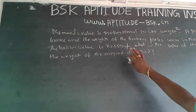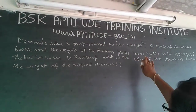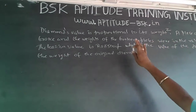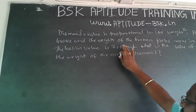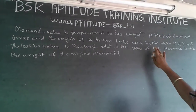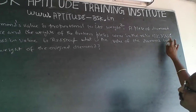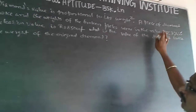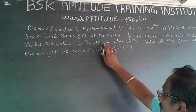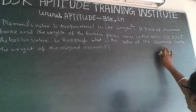The question is: a diamond's value is proportional to its weight squared. A piece of diamond broke and the weights of the broken pieces were in the ratio 1:2:3:4:5. The loss in value is Rs 85,000. What is the value of the diamond?